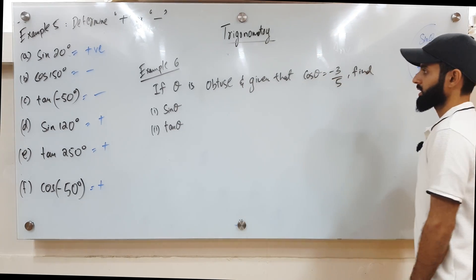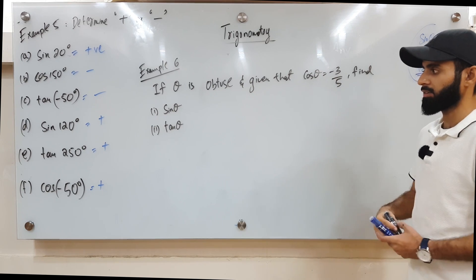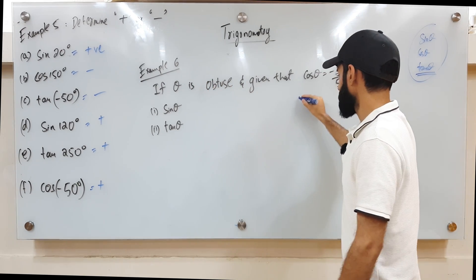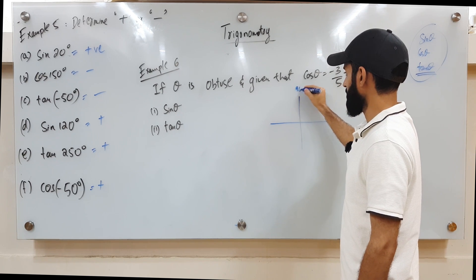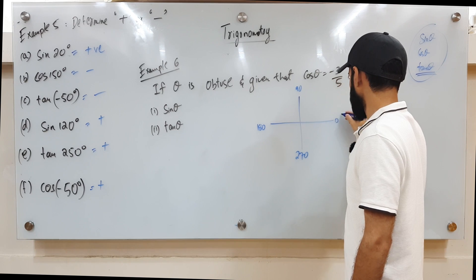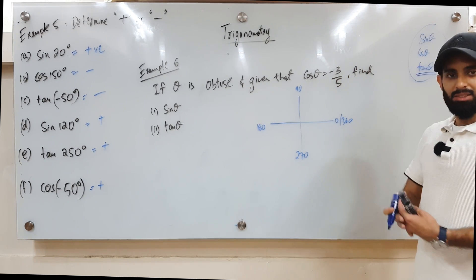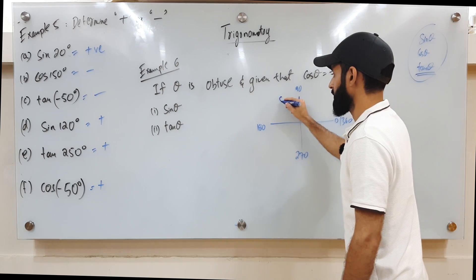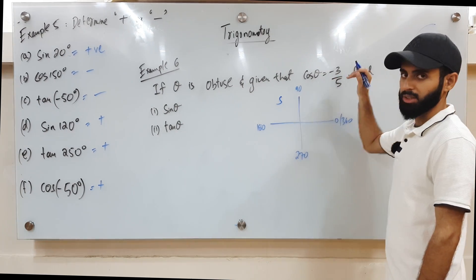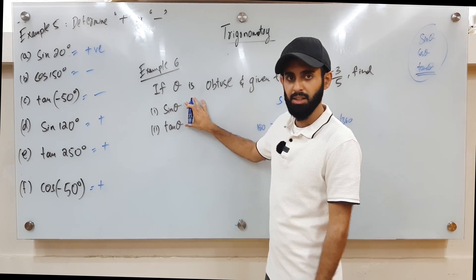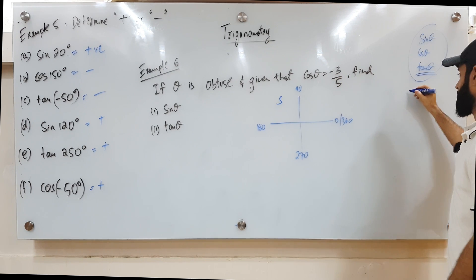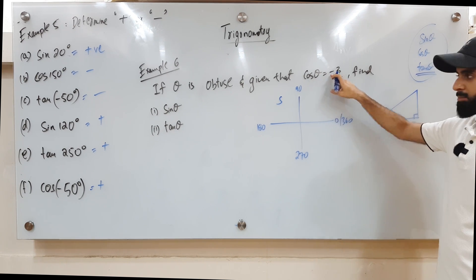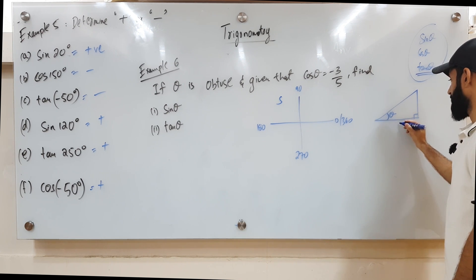Here's example 6. It says: if theta is obtuse and cos theta equals negative 3 over 5, find sine theta and tan theta. Theta being obtuse means it can only be in the second quadrant, since an obtuse angle is greater than 90 and less than 180. This is further cemented by the fact that cos theta equals negative 3 over 5 — the second quadrant is the home ground of sine, so cos is obviously negative there. Since I need to find sine and tan, I need to incorporate this into a right-angle triangle. When working with a triangle we use lengths, so although the value is negative I'll take the positive value — adjacent is 3, hypotenuse is 5.